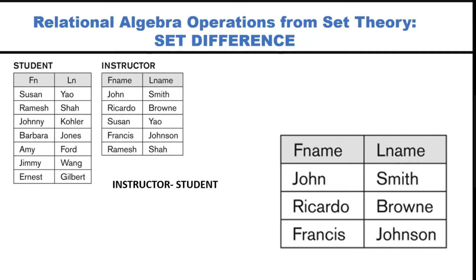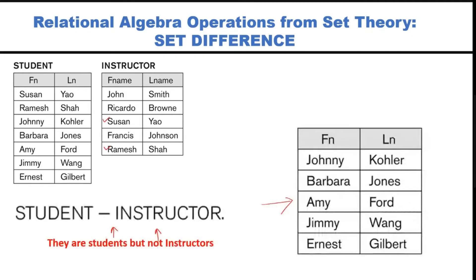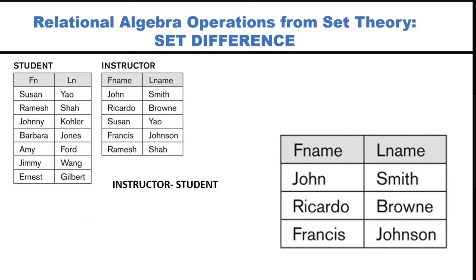Now let's try 'instructor minus student' — we are just flipping the query. You pick from instructor and search in student. Susan is there, so cannot pick Susan. Ramesh is there, so cannot pick Ramesh either.